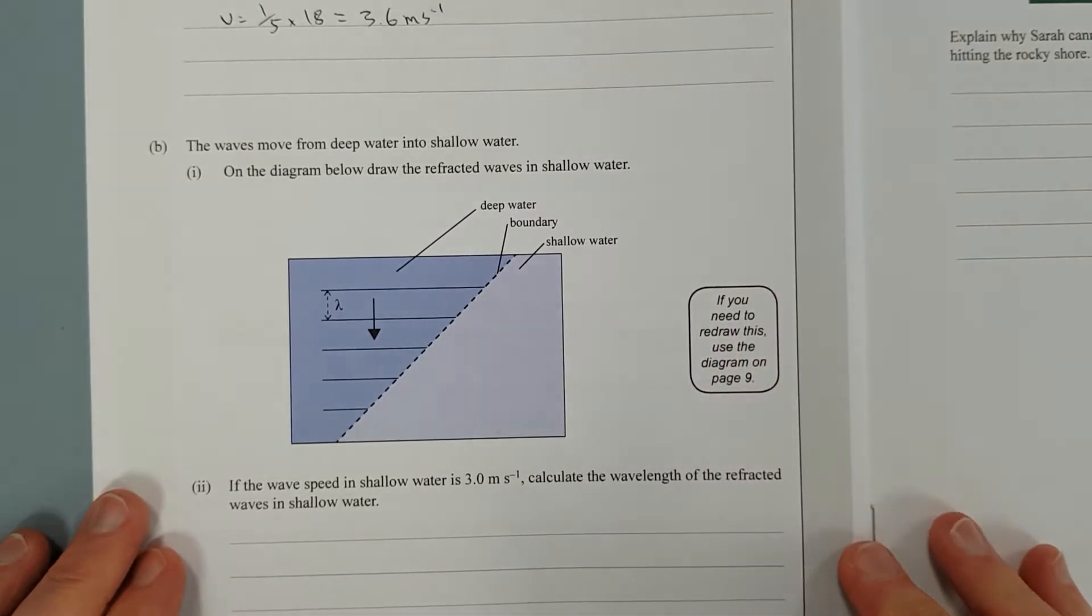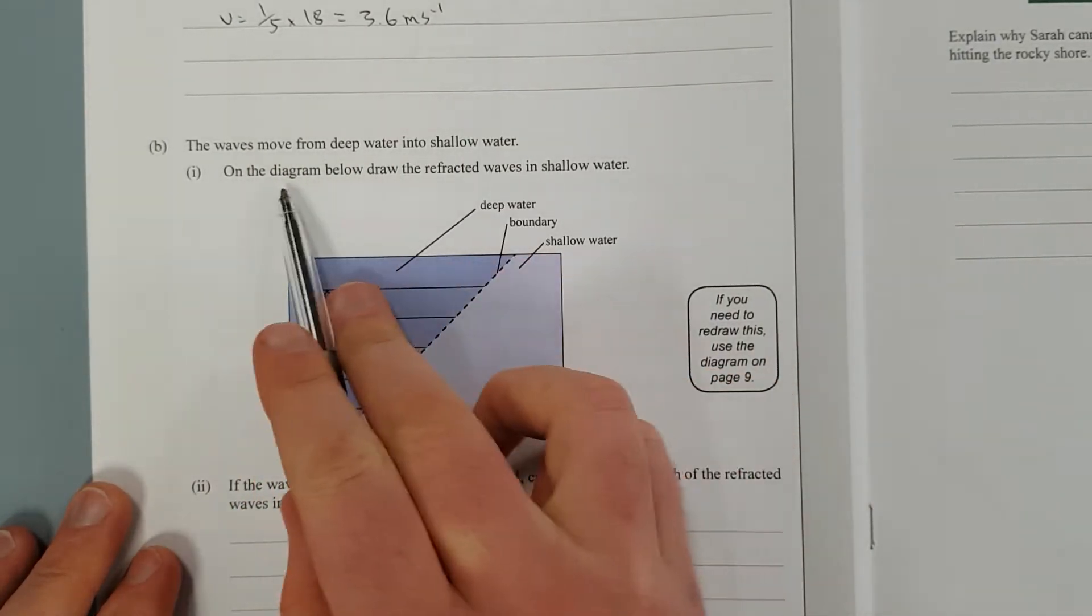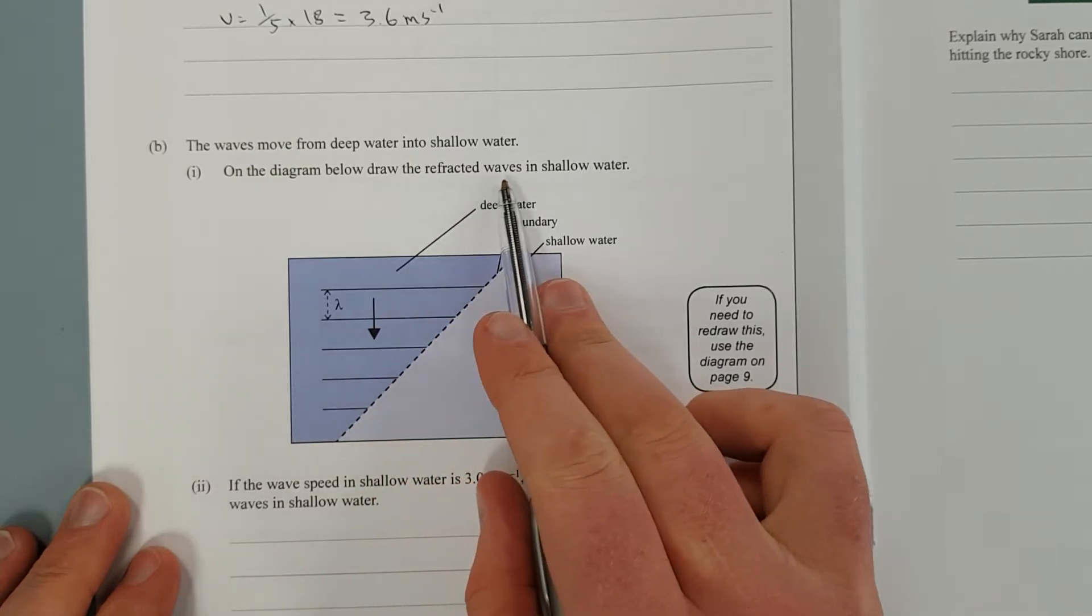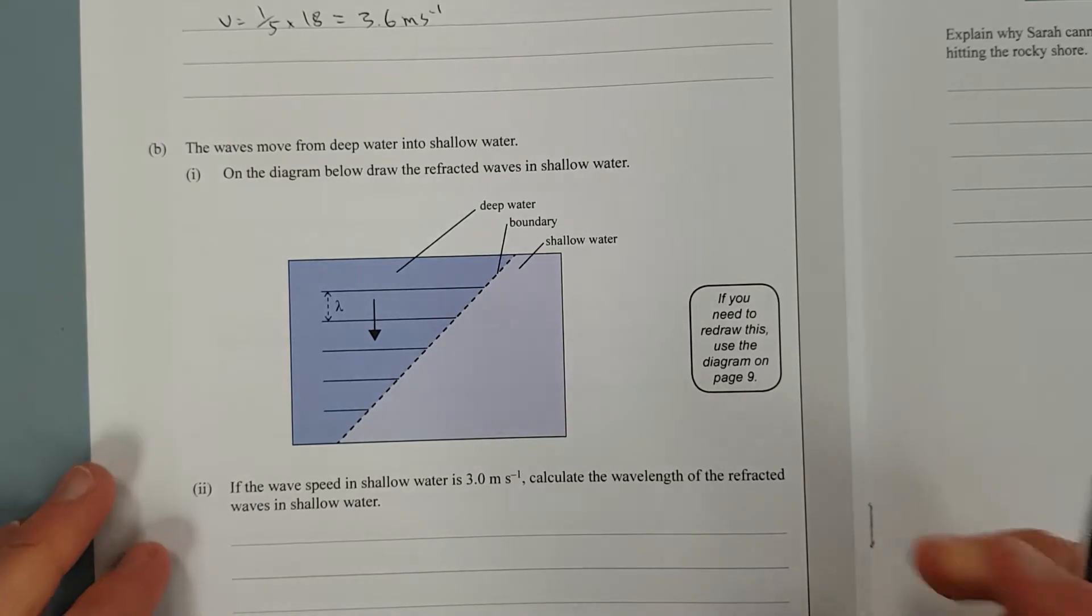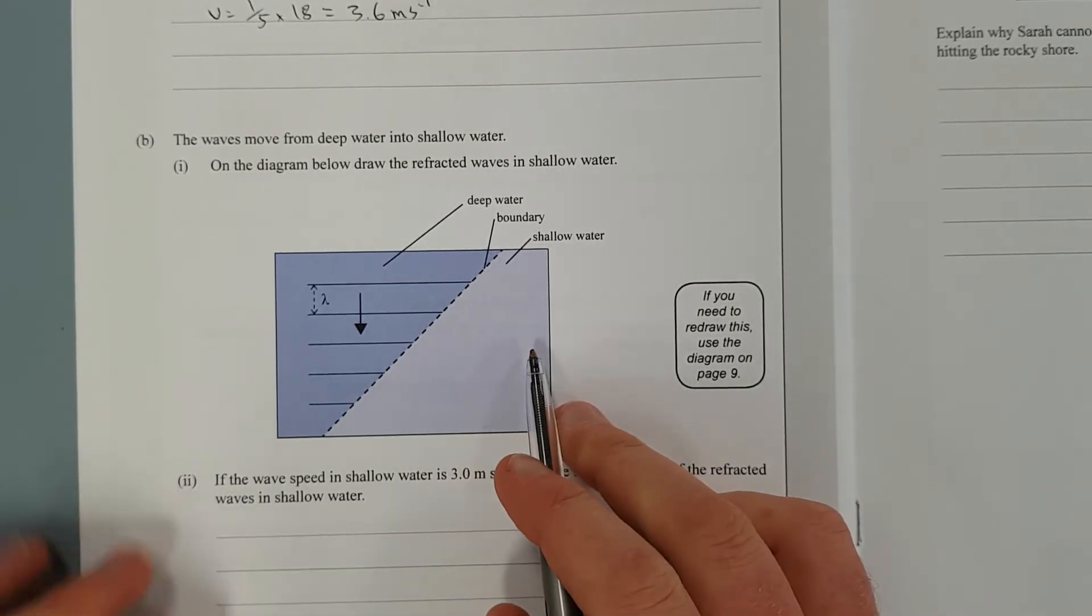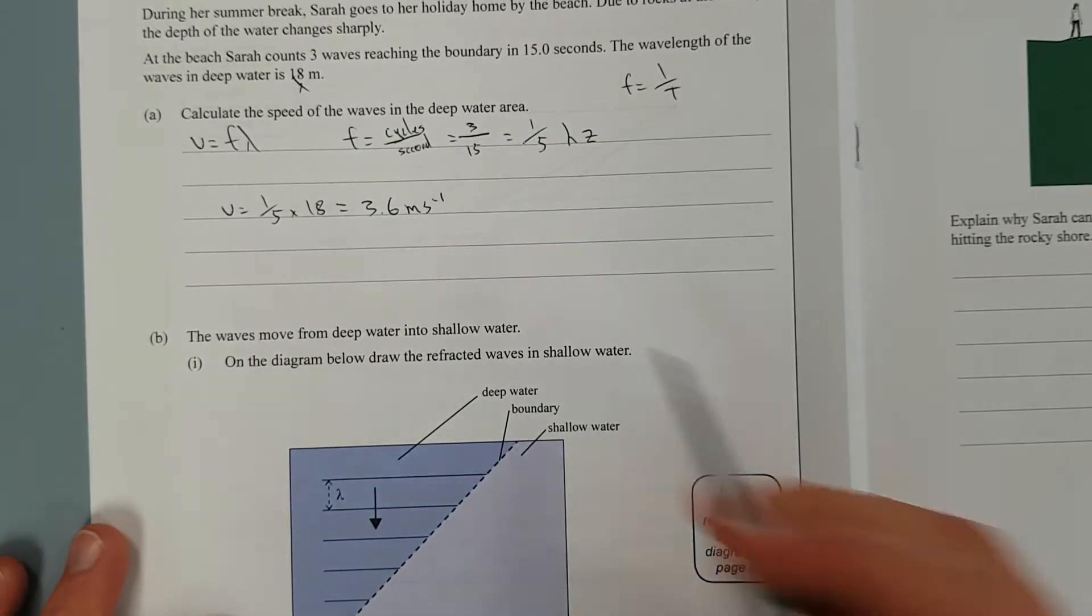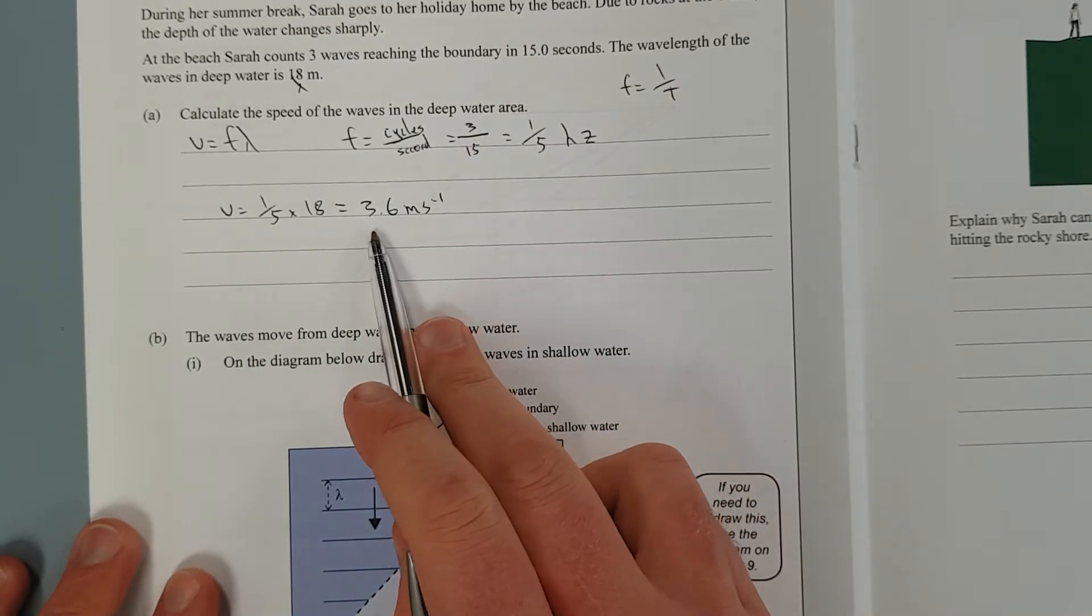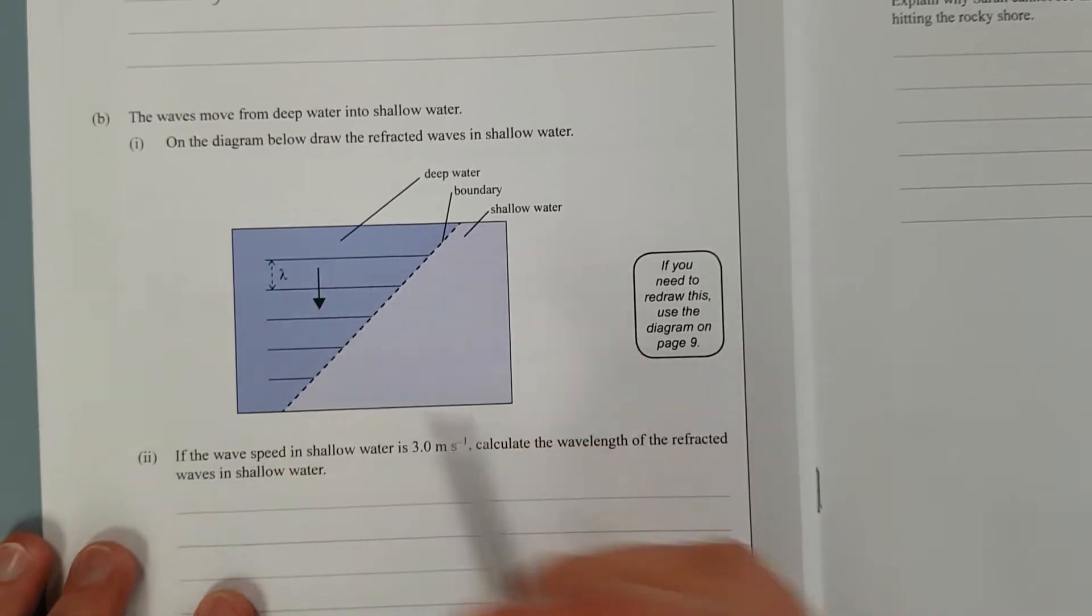Next question. Waves move from deep water to shallow water. On the diagram below, draw the refracted waves in shallow water. This is a bit of a tricky one. If you didn't already know that waves travel slower in shallow water, now you do. But if you got the first question, you know 3.6 metres, and I've told you here, if the wave speed is 3 metres per second, calculate the wavelength. So we know it's going to slow down.